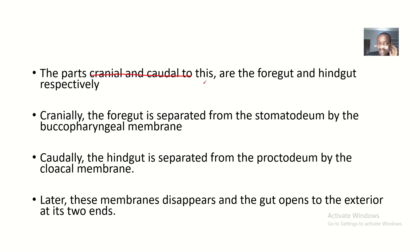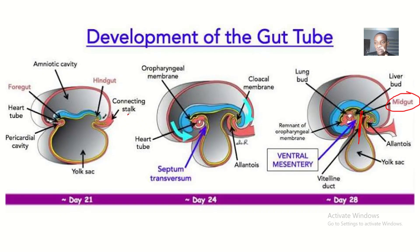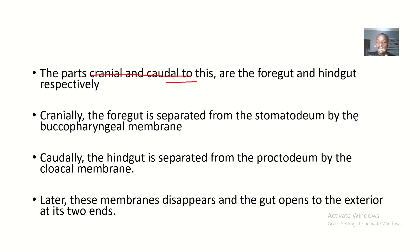The parts cranial and caudal to the midgut are the foregut and hindgut respectively. The foregut is the part more toward the head side (cranial), and the hindgut is the part more toward the caudal or tail side.